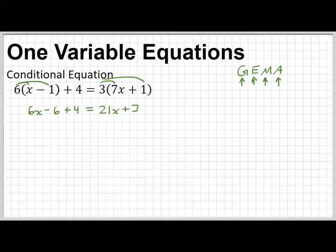Then the next thing for each side would be addition or subtraction. I see an addition right here, a combination problem. We can go negative 6 plus 4, which would be negative 2. So we have 6x minus 2 on that side, and then on the right side, nothing happens.